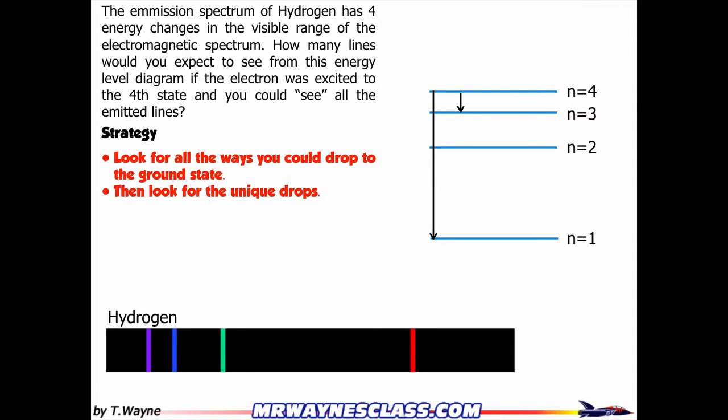Second one goes from n equals 4 to n equals 3. The other one goes from n equals 3 to n equals 1. Then I go from n equals 4 to n equals 2, n equals 2 down to 1. So I just try to start at n equals 4 and drop down, drop down, keep dropping until I get to n equals 1.